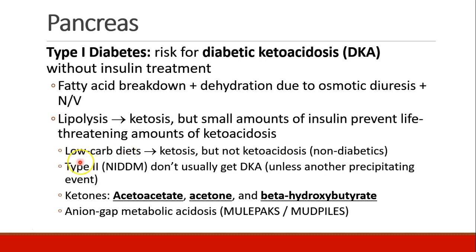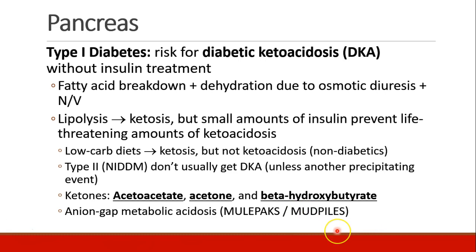The ketones that are formed are acetoacetate, acetone, and beta-hydroxybutyrate. Diabetic ketoacidosis is one of the anion-gap metabolic acidosis conditions. In MULEPACKS, it's the K for ketoacids. In MUDPILES, it's the D for diabetic.